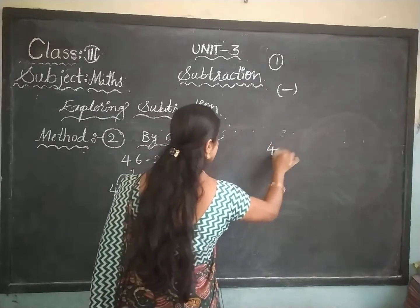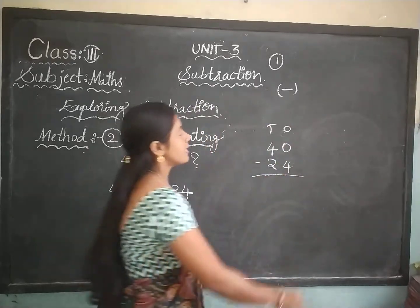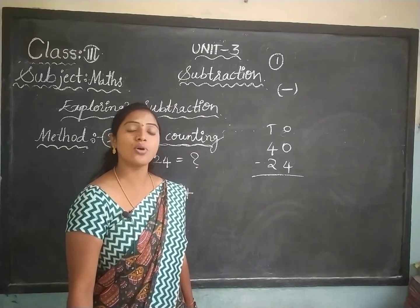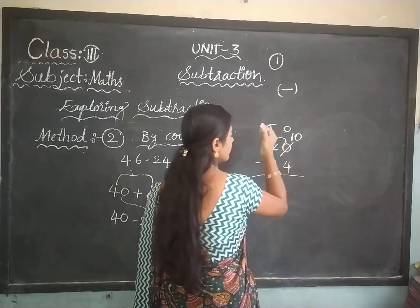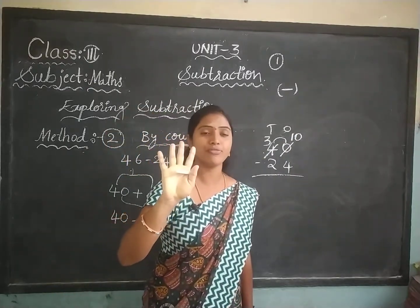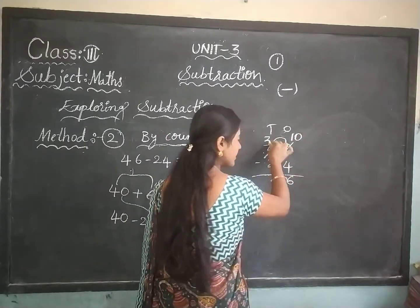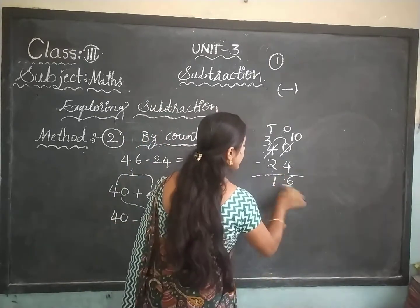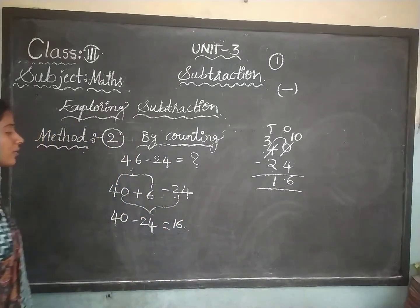For 40 minus 24: in the ones place, 0 minus 4 — we cannot subtract, so take a borrow from the tens place. 0 becomes 10 and 4 becomes 3. Now 10 minus 4: count 4 numbers before 10 — 9, 8, 7, 6. Write 6 in the ones column. Then 3 minus 2: count 2 numbers before 3 — 2, 1. The answer is 16. So 40 minus 24 equals 16.